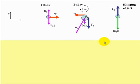For the glider, we have that the acceleration in the x-direction is equal to the tension in the string, which is also m1a1x. The forces in the y-direction are totally balanced.